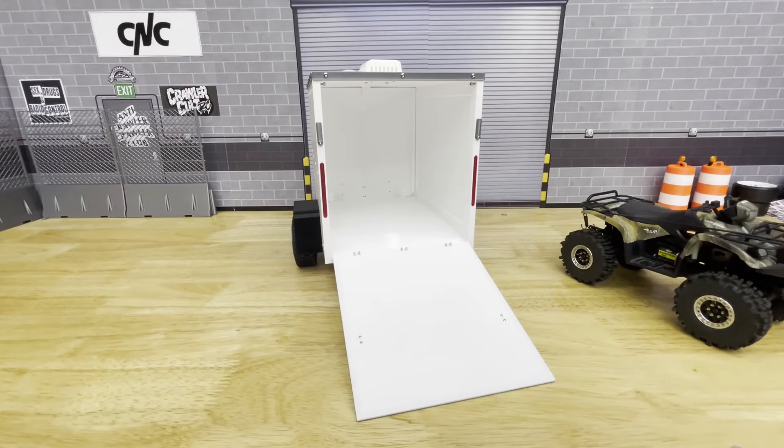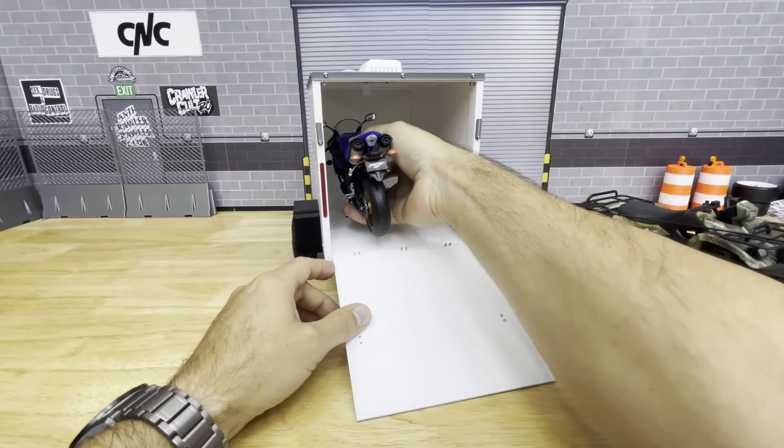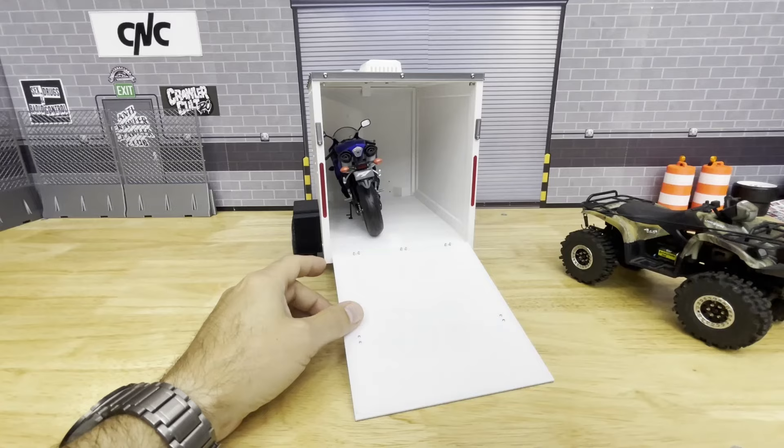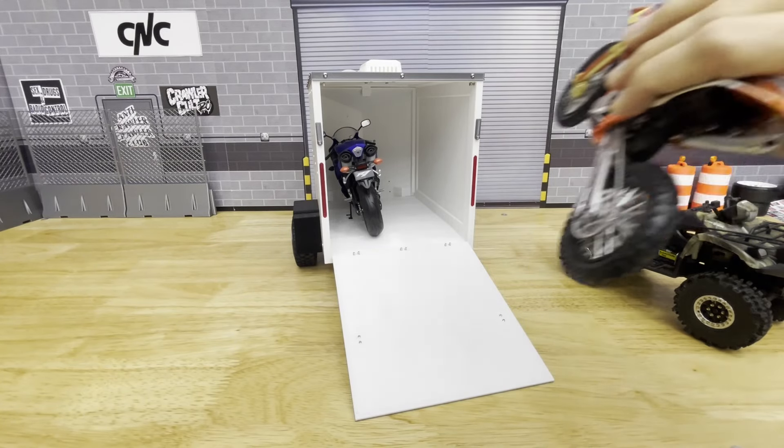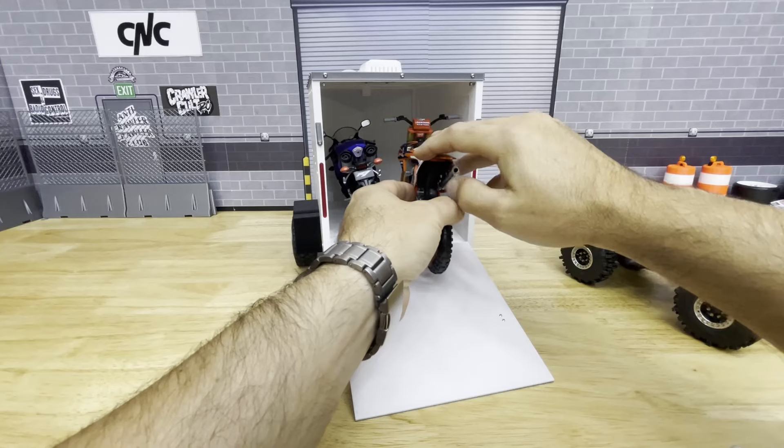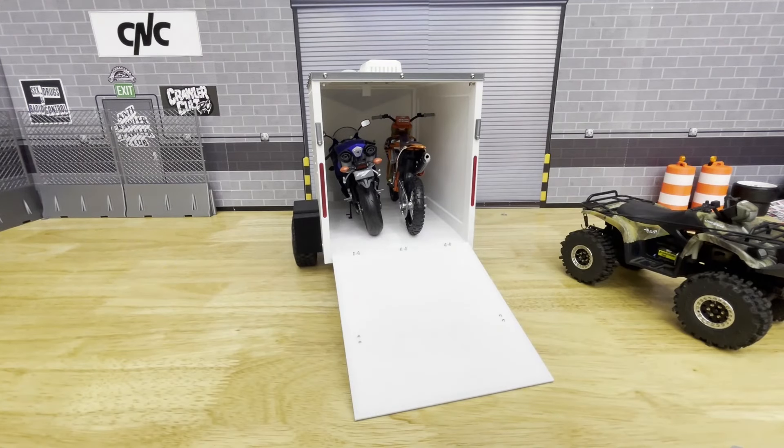Also fits one ton scale motorcycles really nicely. The new ray bikes like this R1 or the dirt bike, they fit in there really nicely. That's kind of what you would see if you put two motorcycles in one of these trailers, that's kind of how they would sit. All right, so let's keep going.